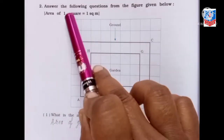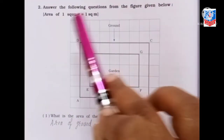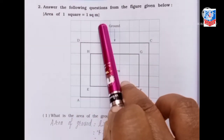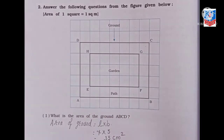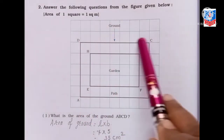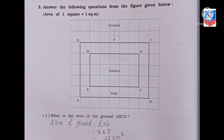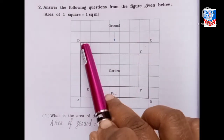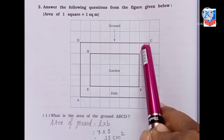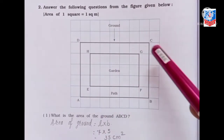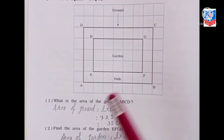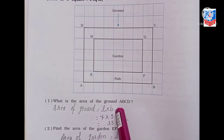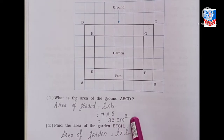Next question: answer the following questions from the figure given below. Area of 1 square equals 1 square meter. First question: what is the area of the ground A, B, C, D? Counting the length: 1 through 7 — so 7 centimeter. Breadth: 1 through 5 — so 5 centimeter. Area of the ground equals length into breadth, that is 7 into 5, which is 35 centimeter square.